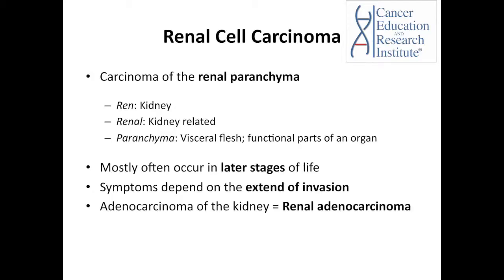Renal cell carcinoma is the carcinoma of the renal parenchyma. Ren means kidney, and renal simply means kidney-related. Parenchyma means in Greek 'visceral flesh,' which refers to the functional parts of an organ in the body. Renal cell carcinoma occurs in middle age or later and the symptoms depend on the extent of its invasion. This may also be called adenocarcinoma of the kidney or renal adenocarcinoma.